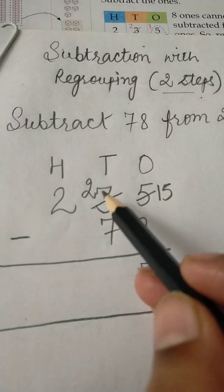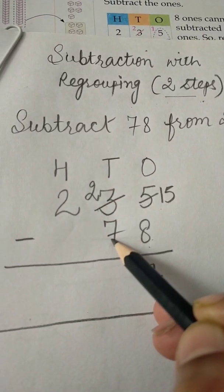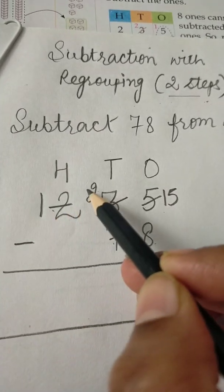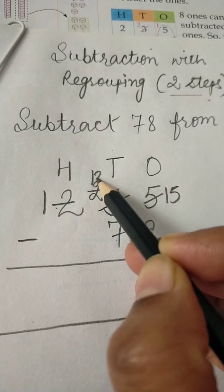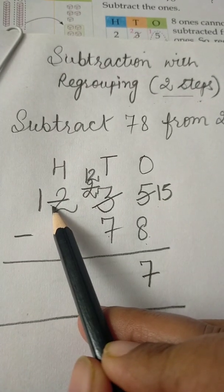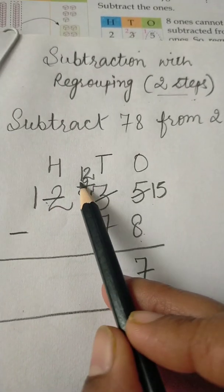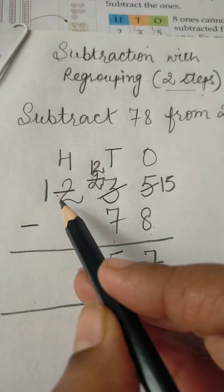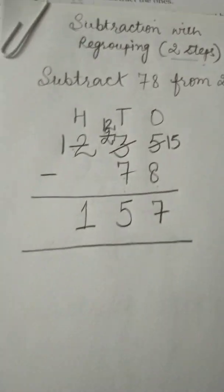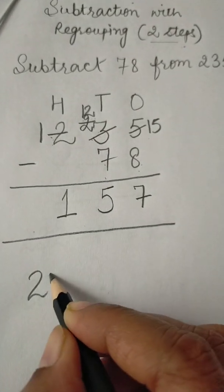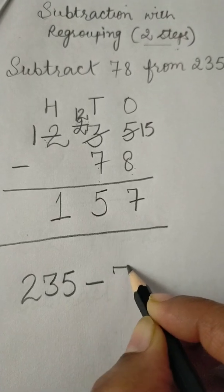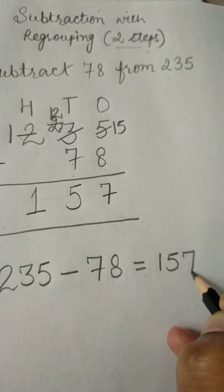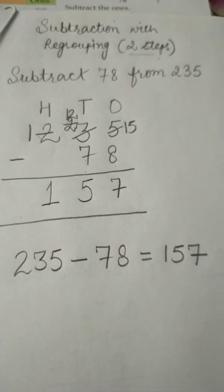15 minus 8 is 7. Now 2 minus 7 is not possible, so we will move to the next place. We will take one borrow from here and it will become 12. We have taken one borrow from here and given to here, it becomes 12. Now 12 minus 7 is 5, and here left 1. So 235 minus 78, we got the difference as 157.